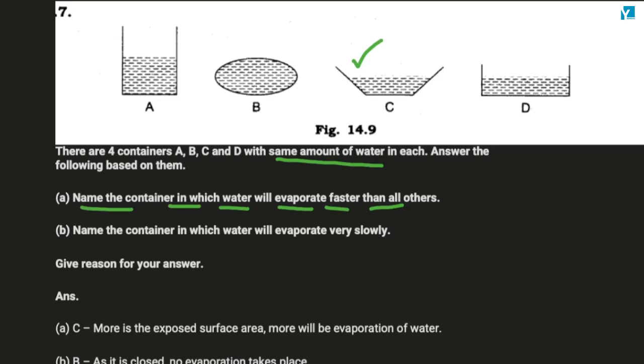What is the second number? Name the container in which the water will evaporate very slowly. In B, it is very slow.